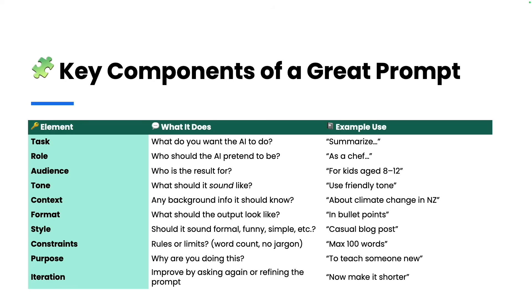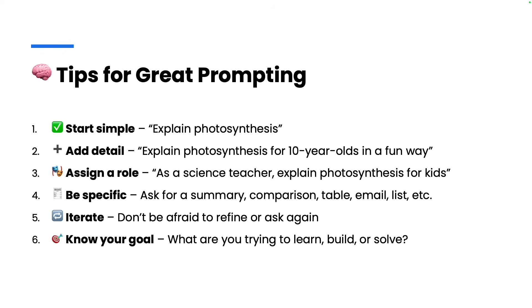Finally, you get to iterate on your responses. Iteration means when you get your first output, you don't have to stop there — you can improve the quality by refining the prompt again and again. On a high level, the tips for great prompting are: first, start simple by asking a simple question; then add details like why you want that explanation; then add additional elements like role; be specific; and then iterate. We'll see lots of examples covering all of these tips.